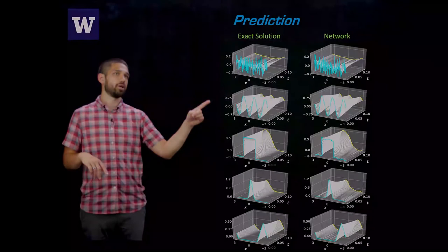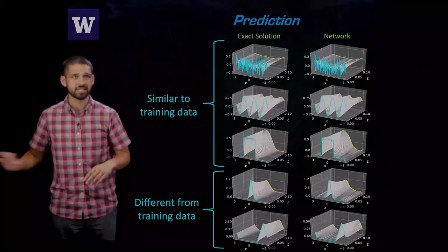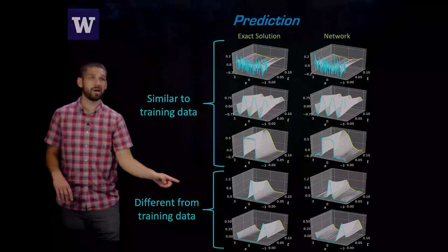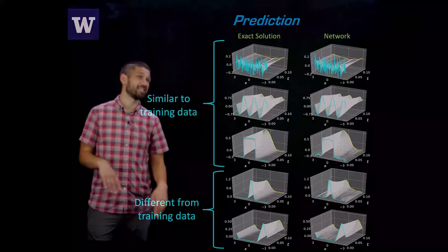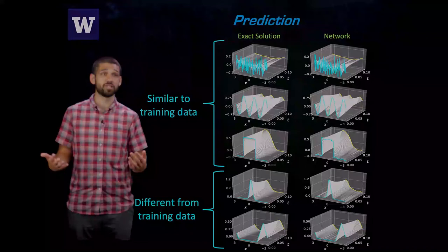And to show some results, here in the first column are some exact solutions from our withheld test data, and then the network predictions over on the right. And you can see really good agreement in terms of the general dynamics of the system for Burgers equation. One thing I want to point out is that these top three examples are actually all the types of initial conditions that are in the training data: white noise, sine waves, and square waves. But if you look at the bottom two examples, those are actually nothing like the training data. We have a Gaussian and a triangle wave. And still with these new initial conditions, our network is able to reproduce the dynamics.